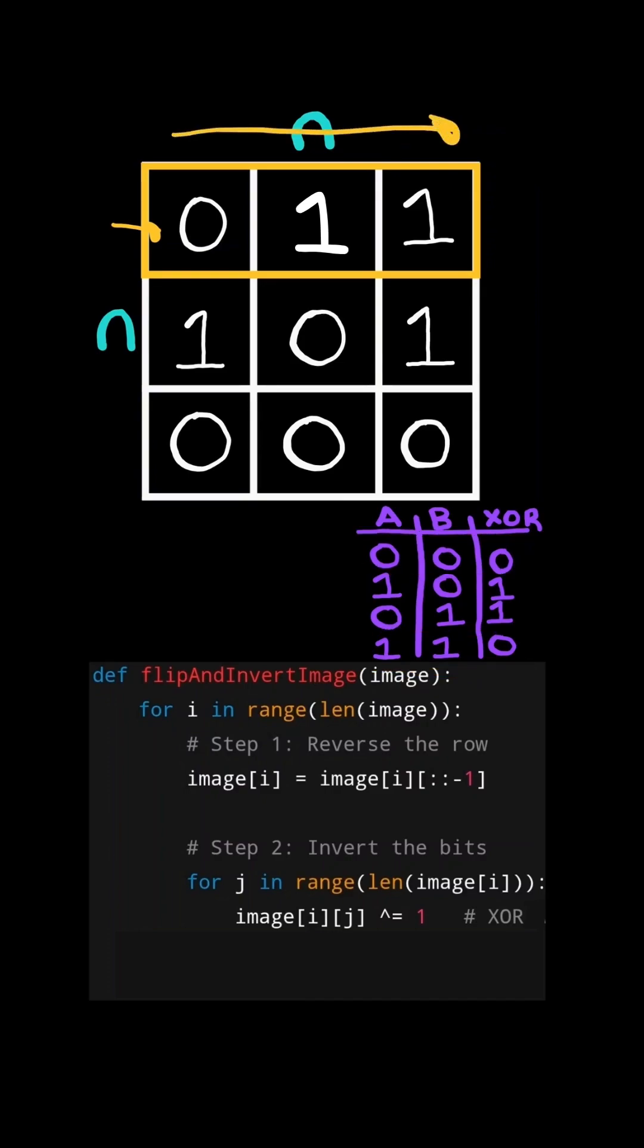We will iterate through the row, and we will take the value we are on and XOR it by 1. And it will reverse the bit because 0 XOR 1 is 1. And so we will update the cell to the result of the XOR operation.